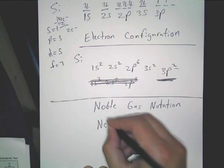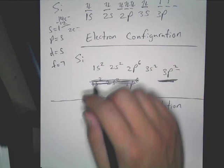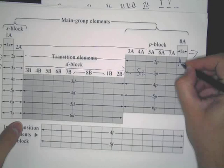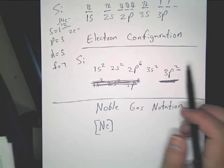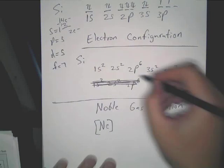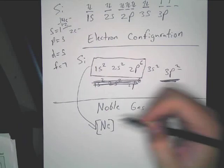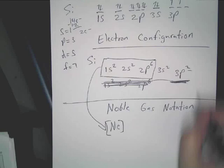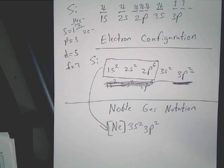We put neon in brackets, and what that's telling us is this: neon covers 1s, 2s, 2p — all filled up. Because noble gases always have a filled electron shell; they're nice and stable. So instead of writing that out, we just write neon in brackets, then write what's after that. It's an even shorter means of doing this.